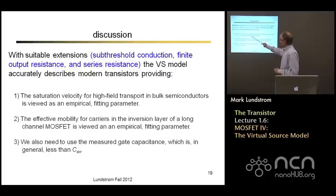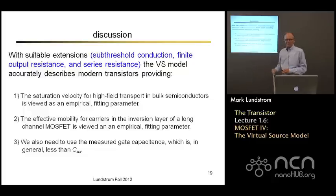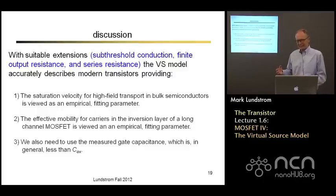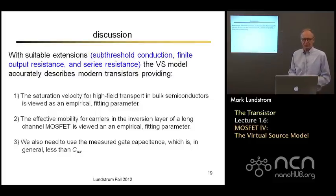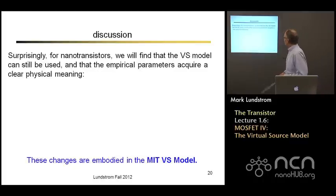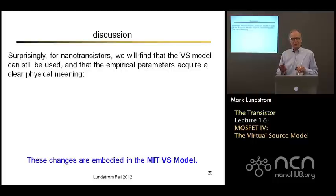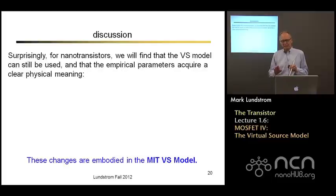We have to view the high field saturation velocity as some kind of empirical parameter. We also have to view the effective mobility as some kind of empirical parameter because it really only makes physical sense when the channel is many mean free paths long. We also need to use the measured gate capacitance, which in general is less than the oxide capacitance. Quite surprisingly, this model with just a little bit of adjustment of these parameters — developed on physics that was very firm and solid in the 1960s, 70s, and early 80s — still does a remarkably nice job of describing modern day transistors.